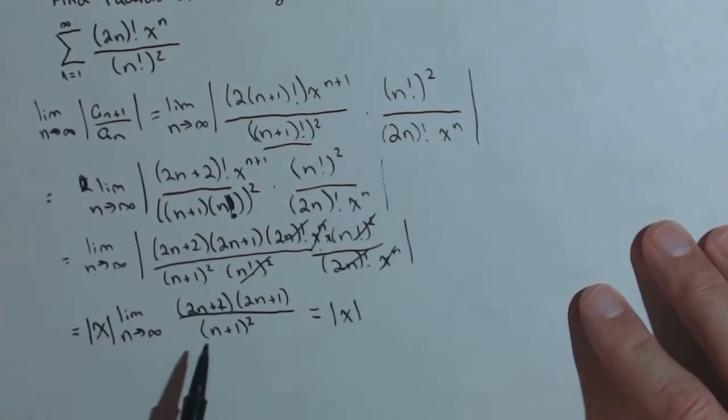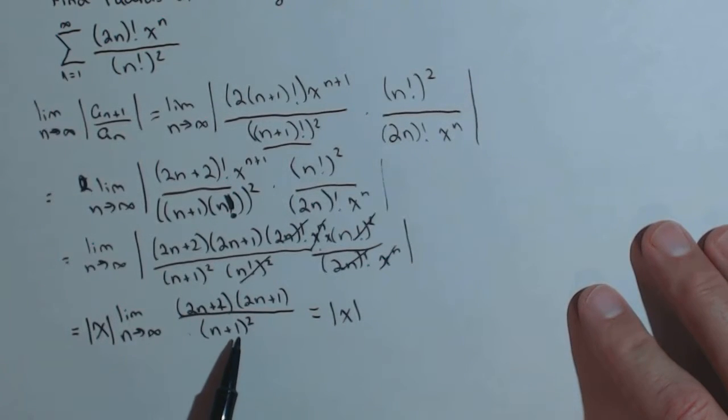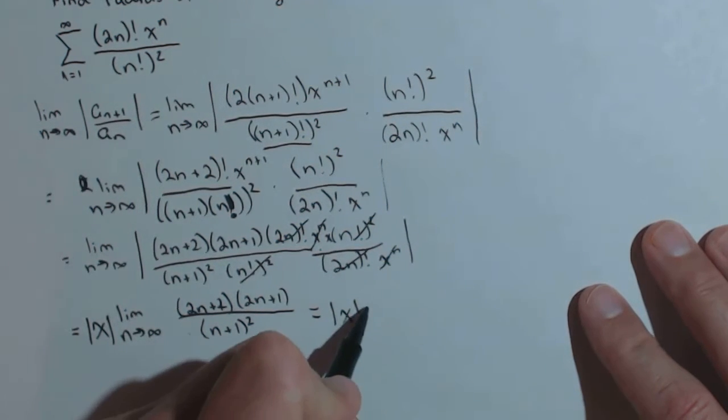So I've got the absolute value of x. Now, this limit, we're going to have a quadratic over a quadratic. And we'll be able to show really quickly with L'Hopital's rule that this limit is just going to be 4.